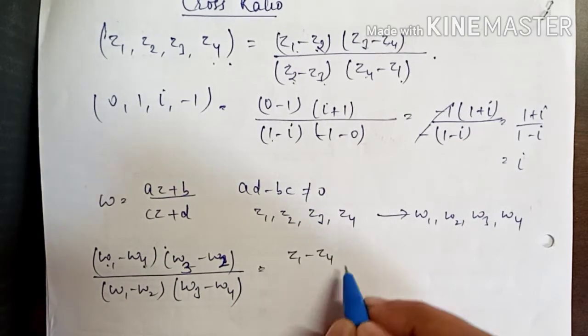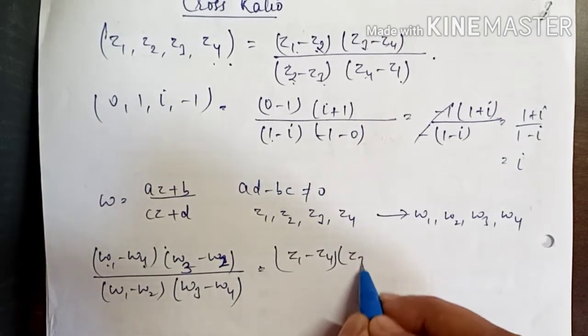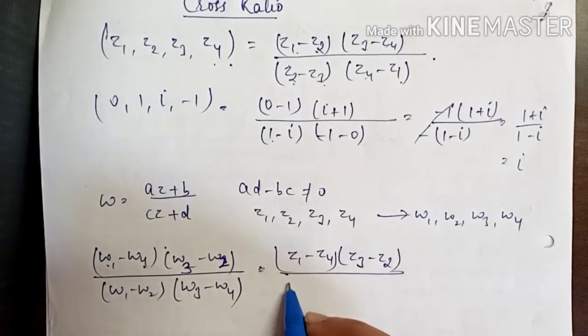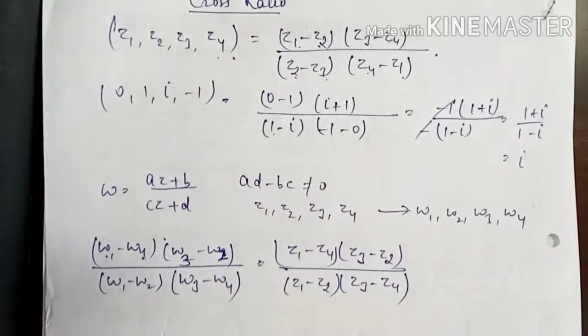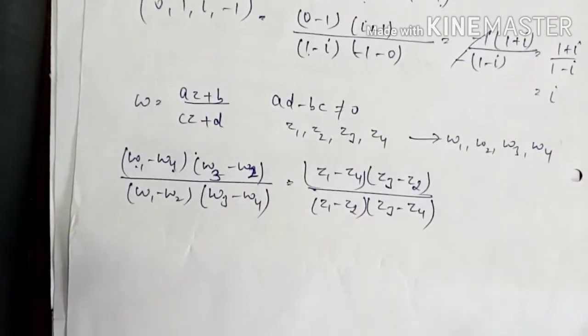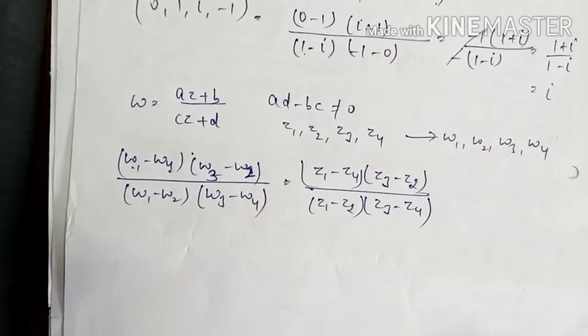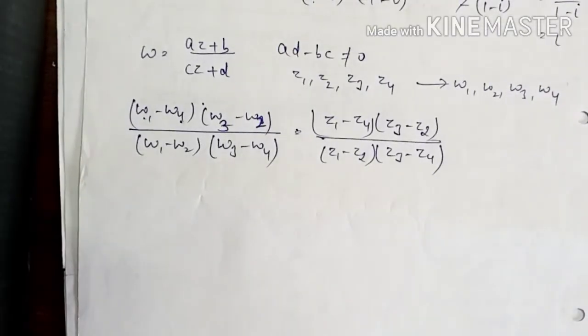This is equal to Z1 minus Z4, Z3 minus Z2 divided by Z1 minus Z2, Z3 minus Z4. We have to prove that cross ratio remains invariant under Möbius transformation.